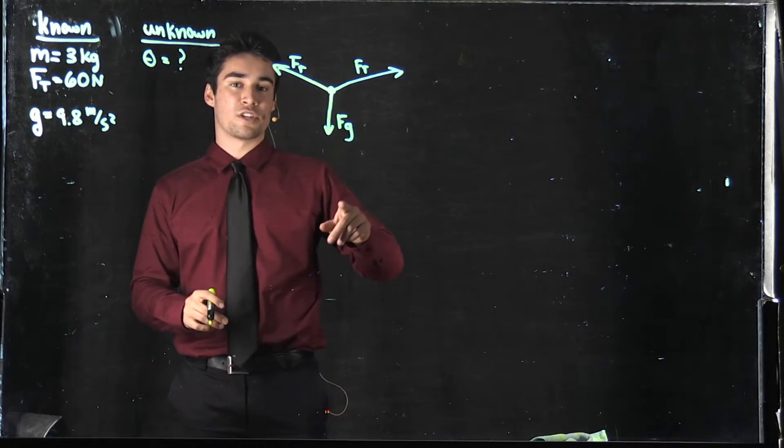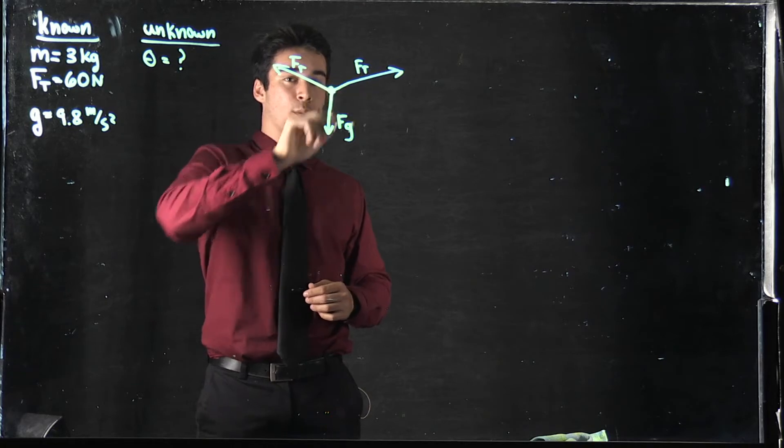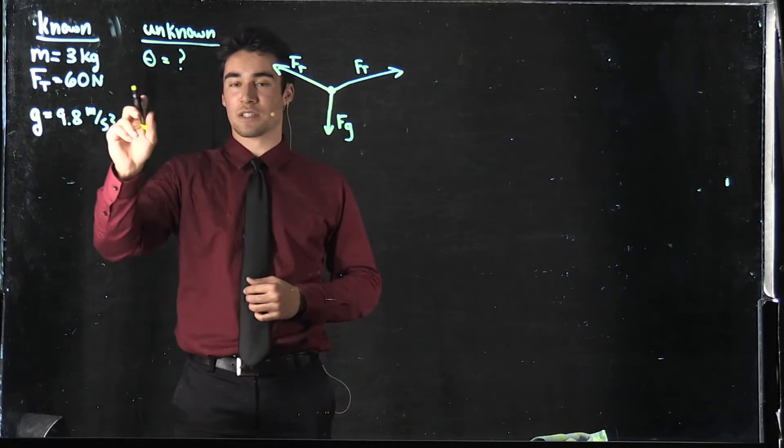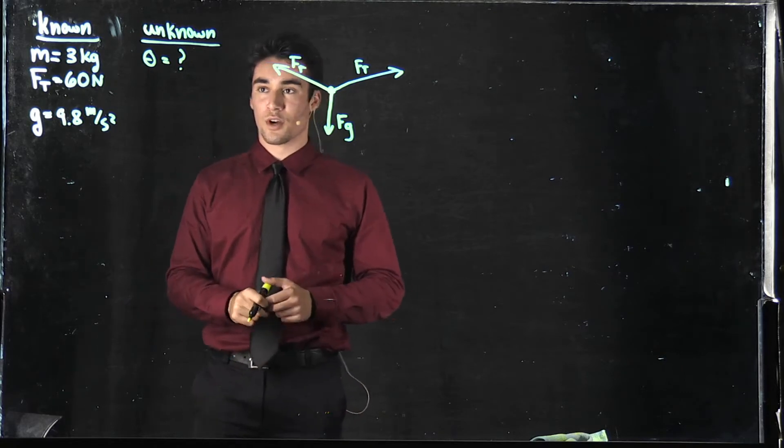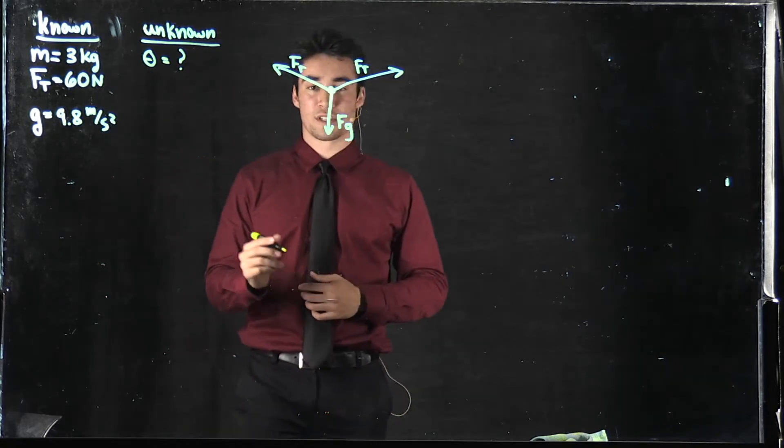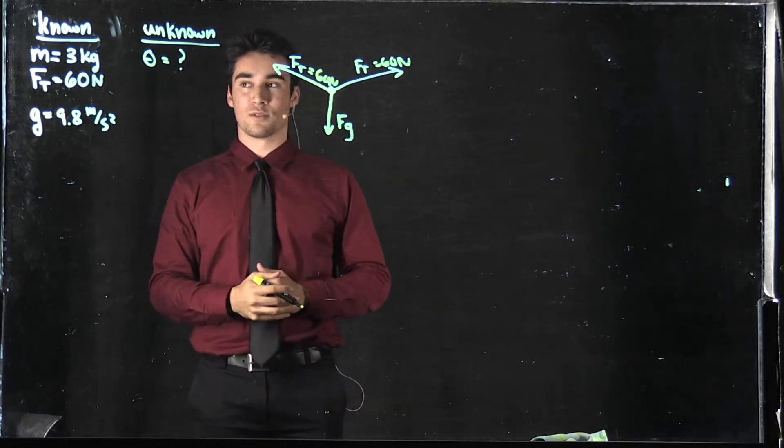We have a free body diagram right here. Here we have a force of tension in each direction from the hanging wire and we have the force of gravity of the mass of the bathing suit. We know that the force of tension is 60 newtons in both directions so we can label this. The mass of the bathing suit is 3 kilograms.